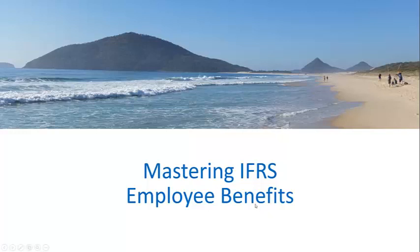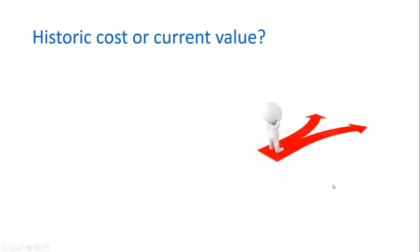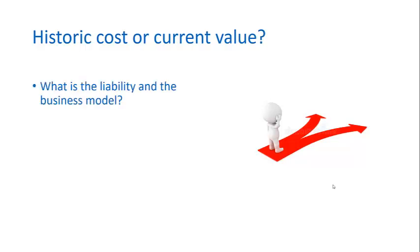What I want to do now is to move on to accounting for employee benefits, and I'd like you to think of this as being a very specific type of provision. The first issue we have to consider is whether the standard is going to be a historic cost or a current value, fair value type standard, and that requires us to think about what the liability is and how it fits into the business model. We also need to think about whether the cash flows are fixed as to amount and timing, because if they aren't fixed and certain in terms of timing, it makes a historic cost approach very difficult and you'd have to say it's going to be a fair value type standard.